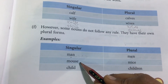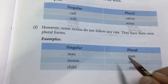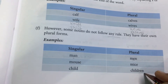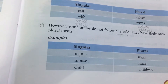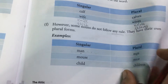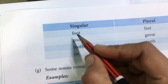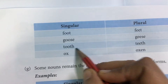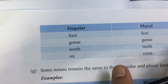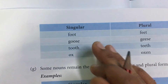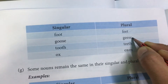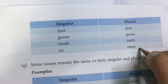As for mouse — mice means a lot of mice. Child becomes children, meaning a lot of children. Next is foot — feet. Goose becomes geese. Ox becomes oxen. So these words — feet, geese, teeth, oxen — these are the plural forms. No standard rule applies; these are irregular plurals.